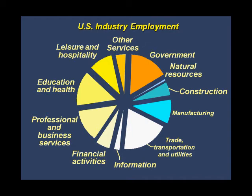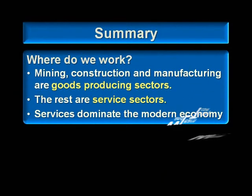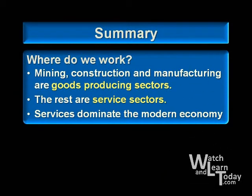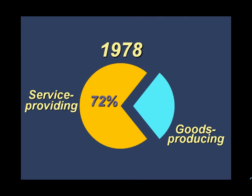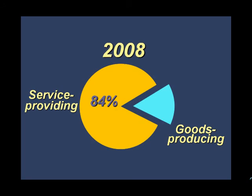You may have heard that we've entered a post-industrial phase — that we are a service economy. In fact, most of us are employed in service industries. Goods producing industries include mining, construction, and manufacturing. The rest are service industries, and the transition to this phase has been going on for a long time. In 1960, service producing industries accounted for 65% of our jobs. In 1978, services accounted for 72% of our jobs. In 2008, they accounted for 84% of our jobs. So yes, the service sector is growing in importance, but it's been the dominant sector for a long time.